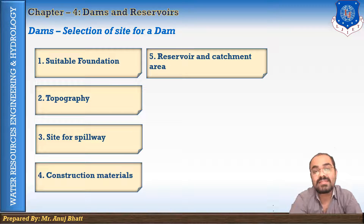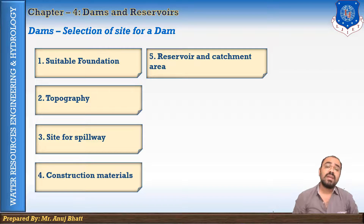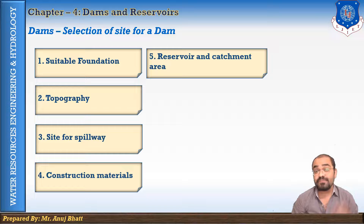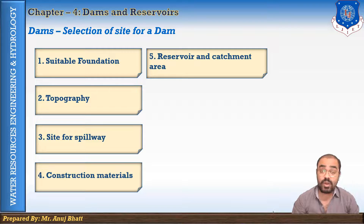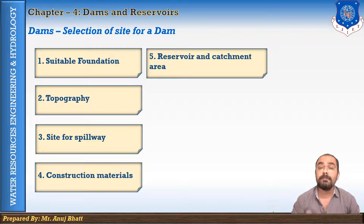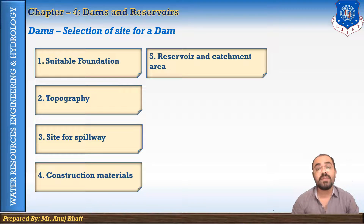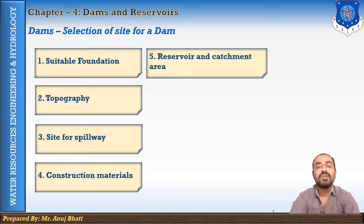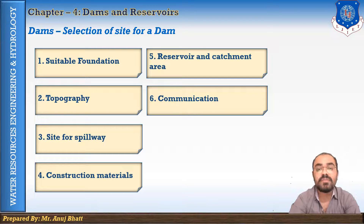The next factor is the reservoir and catchment area. The reservoir site should be such that the quantity of leakage through its sides and bed would be minimum. The site should exclude tributaries carrying a high percentage of silt. A deep reservoir should be formed, and the cost of land and property submerged should be minimum. The reservoir basin upstream of the dam should preferably be cup-shaped with a flat bottom but steep slopes.